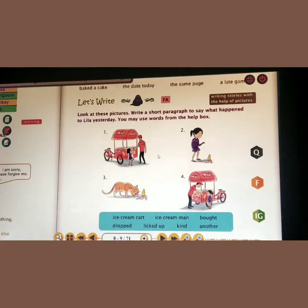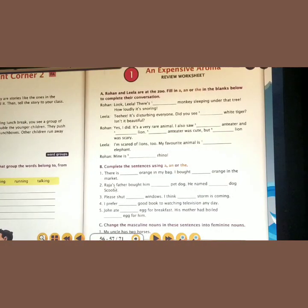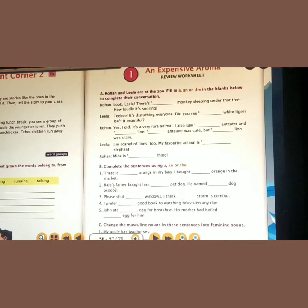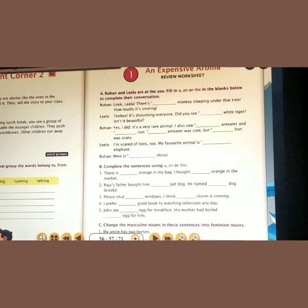Now let's go to the next review worksheet, page 57. 'An Expensive Aroma' Review Worksheet A. Rohan and Leela are at the zoo, filling A, AN or THE in the blanks to complete their conversation. Rohan says: 'Look, Leela, there is dash monkey sleeping under that tree. How loudly it is snoring.' We can use the article A — 'a monkey sleeping under that tree' — since there is only one monkey.